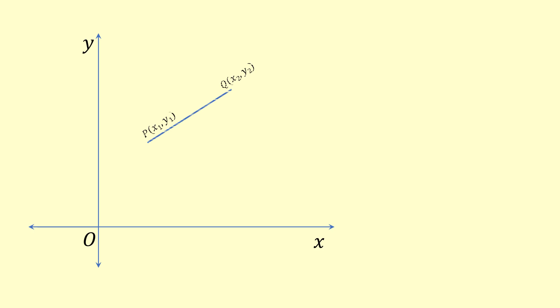Consider two points p and q whose coordinates are given. Let us say x1, y1 and x2, y2. We have to find the length of pq, that is the distance between the points p and q. To compute the distance, let us do some constructions.